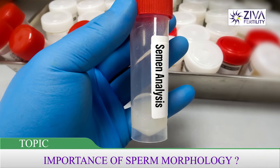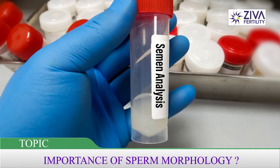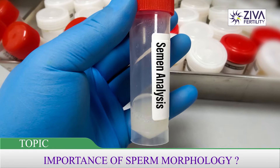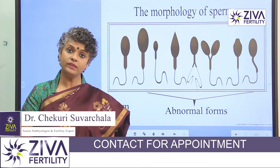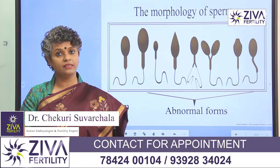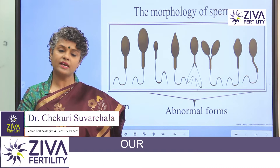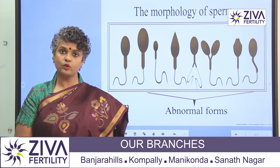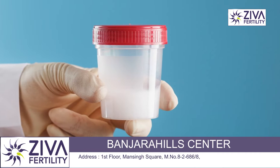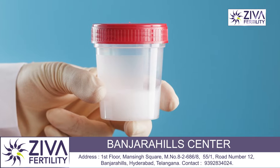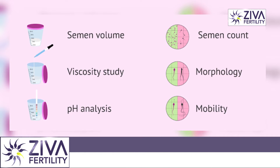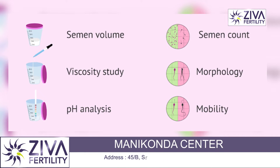Semen analysis is a first-line investigation when we are trying to assess male fertility. When a couple approaches us, the woman and the man are examined simultaneously. While scans and blood tests are involved for a woman, for a man, semen analysis is what we begin with. In semen analysis, we look at the count, motility, and morphology of sperms.